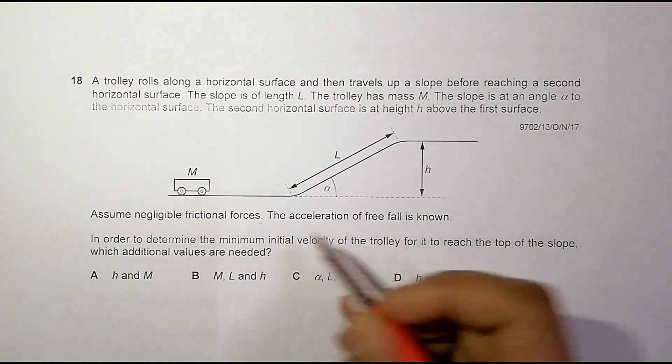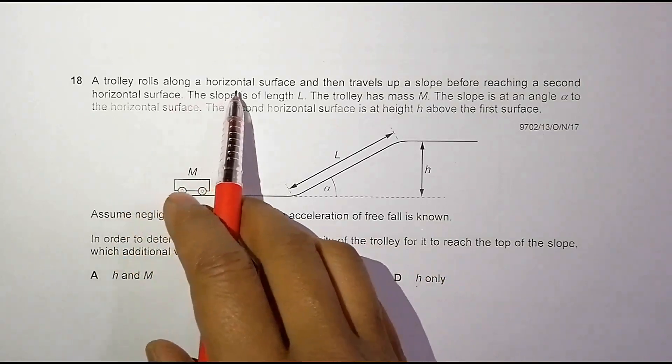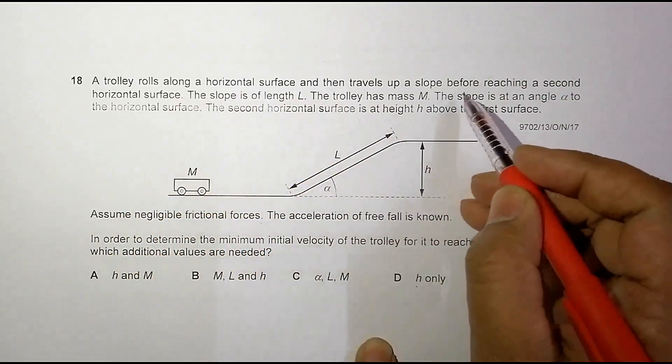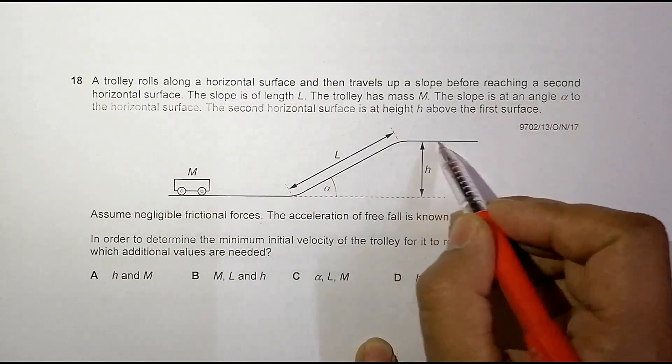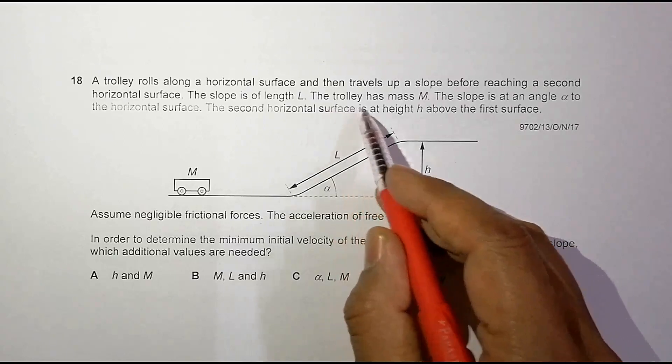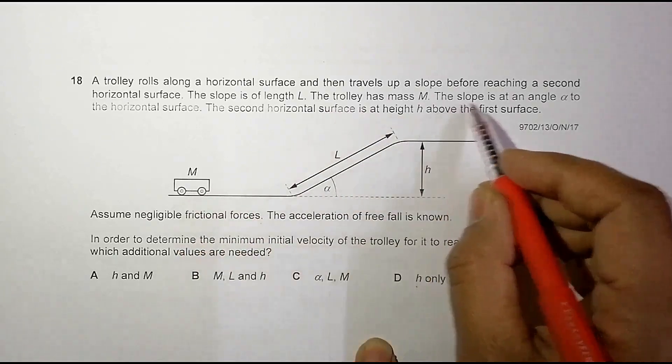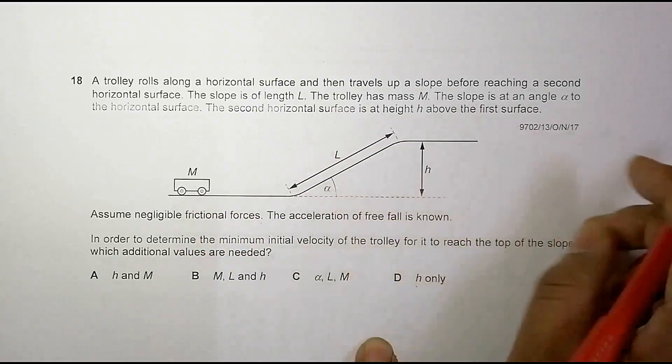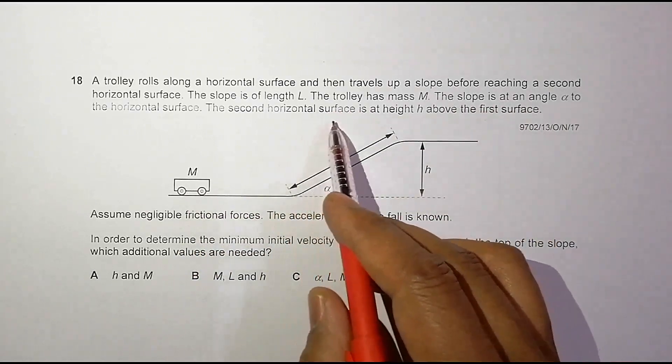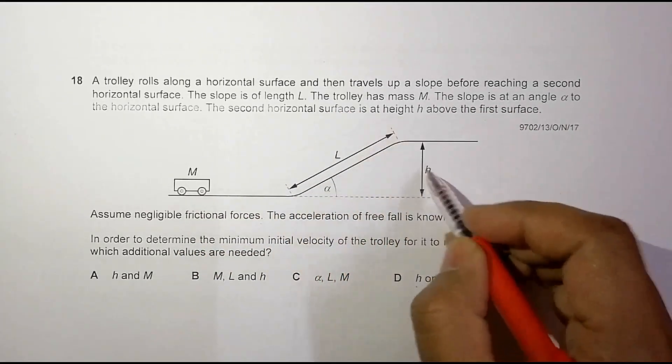A trolley rolls along a horizontal surface and then travels up a slope before reaching a second horizontal surface. The slope is of length L. The trolley has mass M. The slope is at an angle alpha to the horizontal. The second horizontal surface is at height H above the first surface.